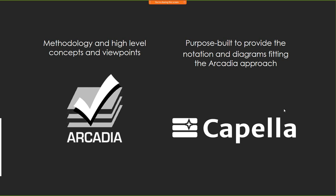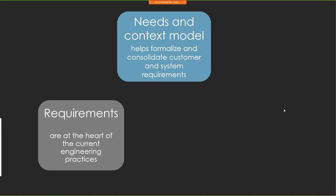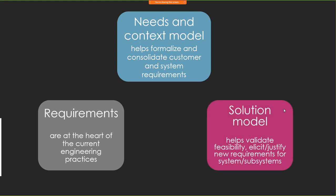Arcadia is a model-based engineering method. It defines a set of high-level concepts and associated viewpoints. Capella is an open-source graphical modeling workbench specifically developed to implement the Arcadia method, providing the notation and diagrams included in Arcadia. Arcadia and Capella are interdependent — Arcadia was designed to be implemented in a tool, and Capella embeds the Arcadia method. In deploying models in organizations, we could not ignore the backbone of systems engineering: requirements. In Arcadia, we complement requirements with models — a needs and context model that helps formalize stakeholder requirements and system requirements, and a solution model which helps validate feasibility and elicit new requirements for system subsystems.